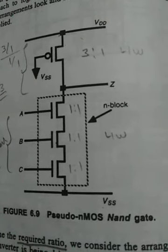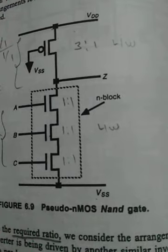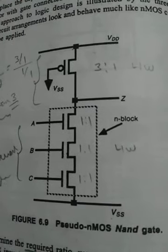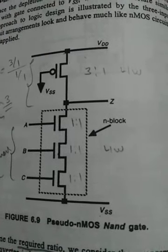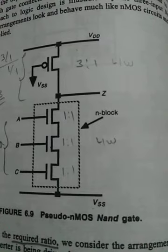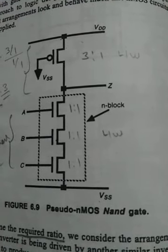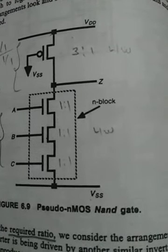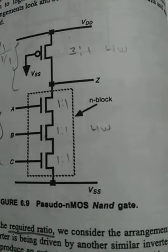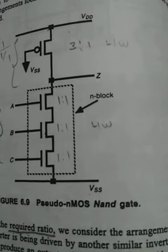Good morning students. Today I am going to explain other forms of CMOS logic. With the availability of both N and P transistors, we can design alternatives to inverter-based CMOS logic. We have so many different forms of CMOS logic: pseudo NMOS logic, dynamic CMOS logic, clocked CMOS logic, CMOS domino logic, and NP CMOS logic. Now we'll discuss each of these.